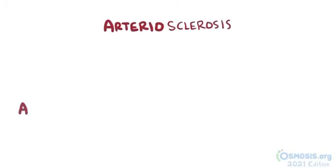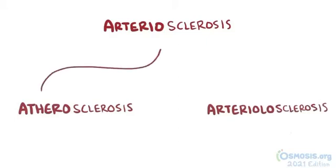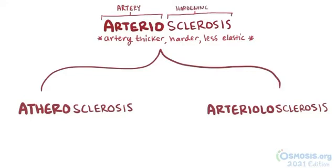These three words look the same: arteriosclerosis, atherosclerosis, and arteriolosclerosis. Arteriosclerosis is a general umbrella term describing diseases where the wall of the artery becomes thicker, harder, and less elastic than normal. You can figure that out right from the name — arterio, which is Greek for artery, and sclerosis, which is Greek for hardening.